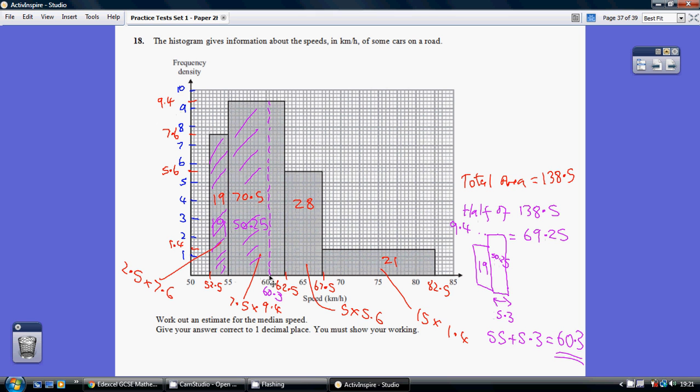I knew that this area in purple had to be 50.25. So the area of that rectangle divided by the height of that rectangle, 9.4, gave me a base length of 5.3. 55 add 5.3 was my 60.3.